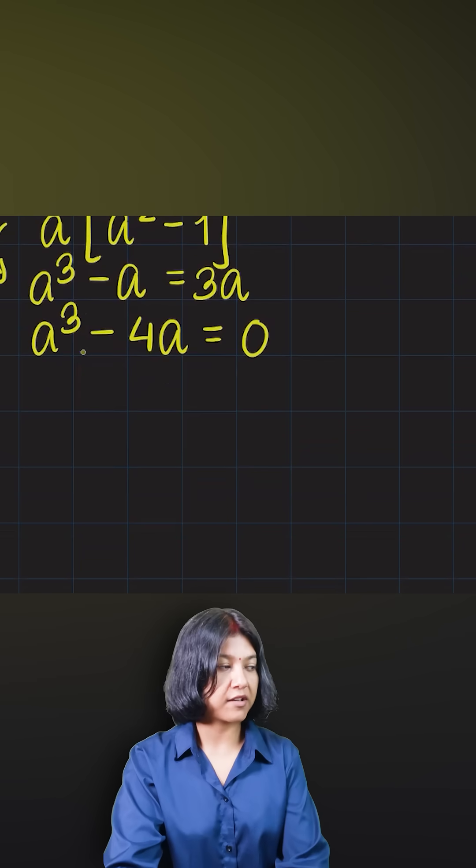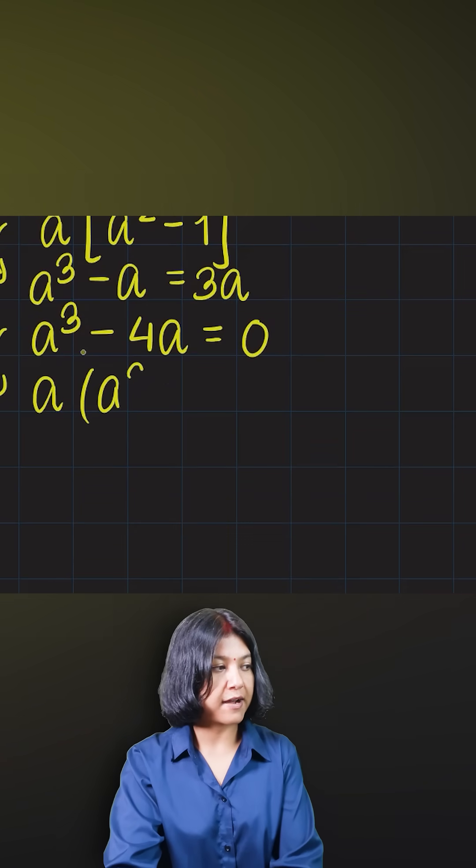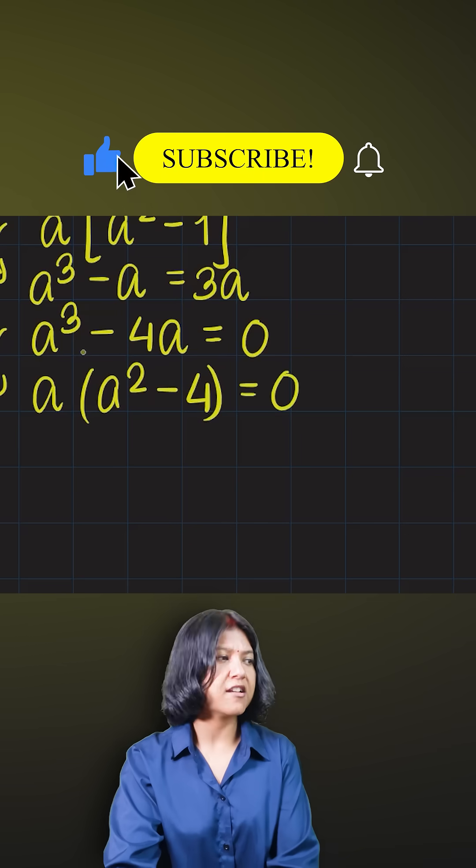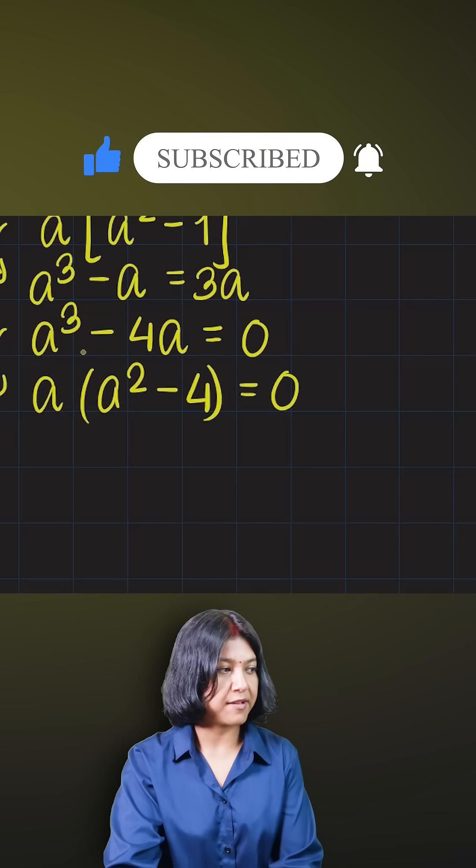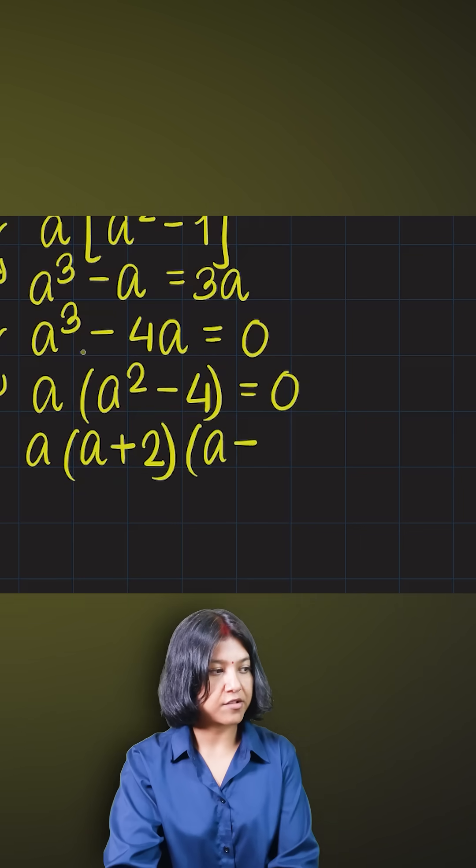Now what is the quickest way we can solve this? You take out a as common. You get a squared minus four. a squared minus four is again the difference of two squares, which can be expressed as the sum of the two values—a plus two—and the difference of the same two values—a minus two.